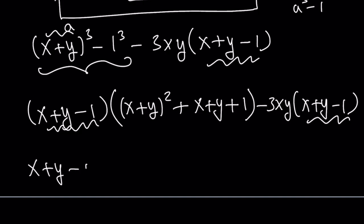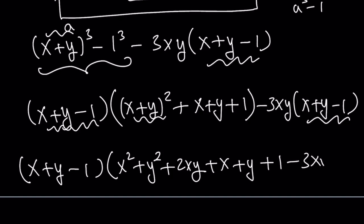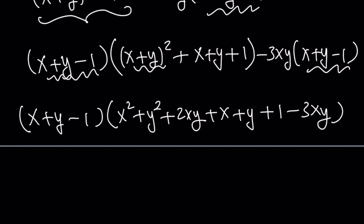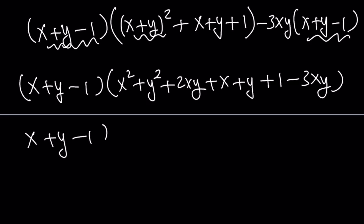Now, you have a common factor. So, we can take it out. x plus y minus 1. And then the rest is going to be, we can go ahead and expand this. x squared plus y squared plus 2xy. That's how I usually expand it. Plus x plus y plus 1 minus 3xy. Because we already took out a common factor, we don't need to write it.